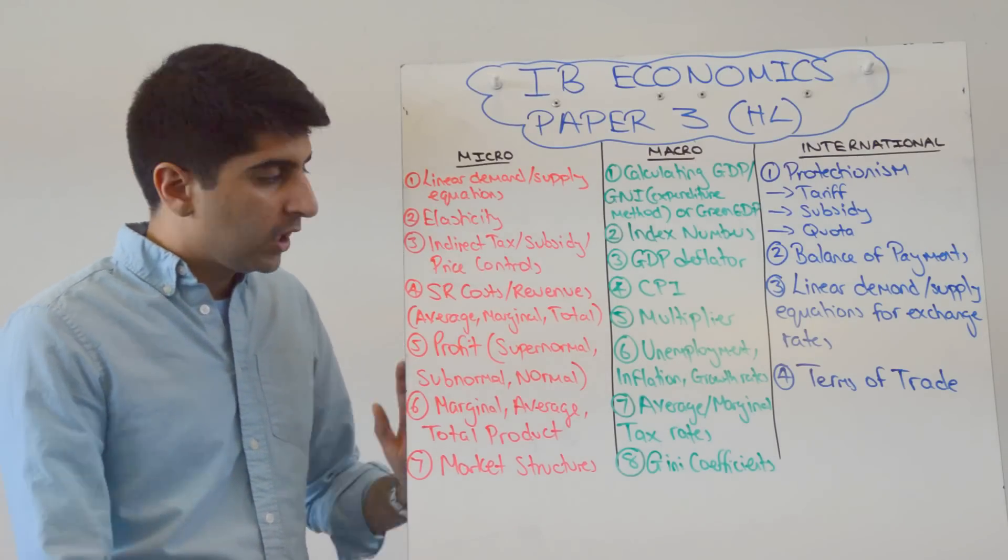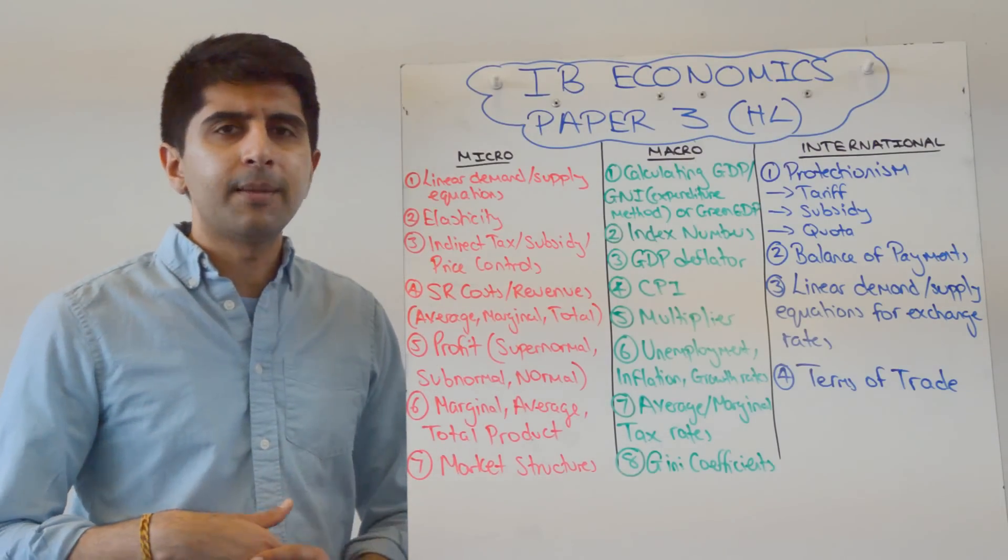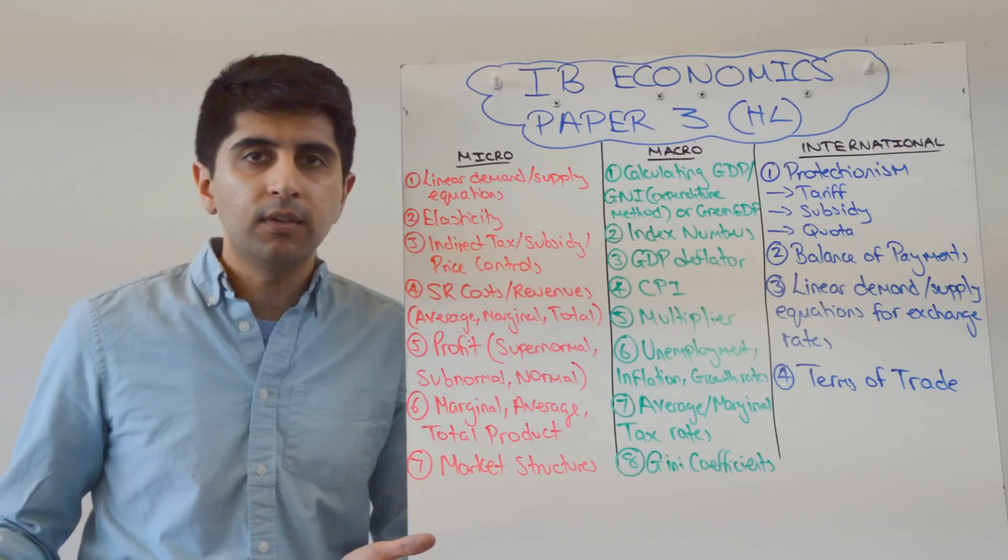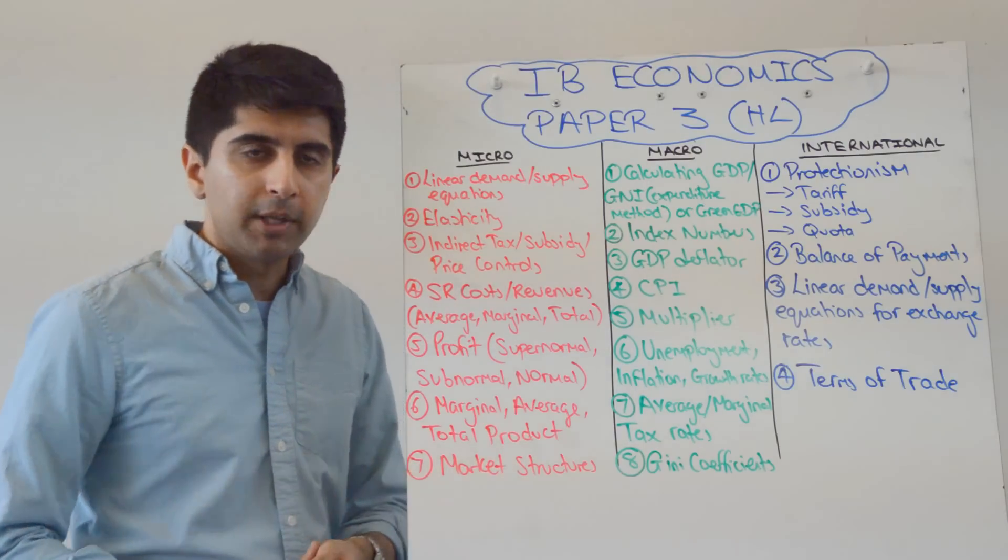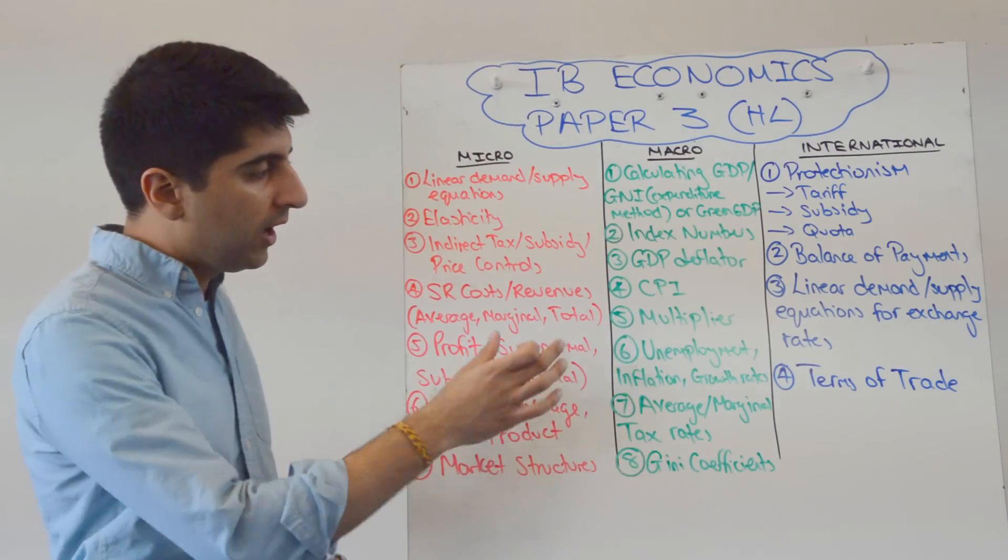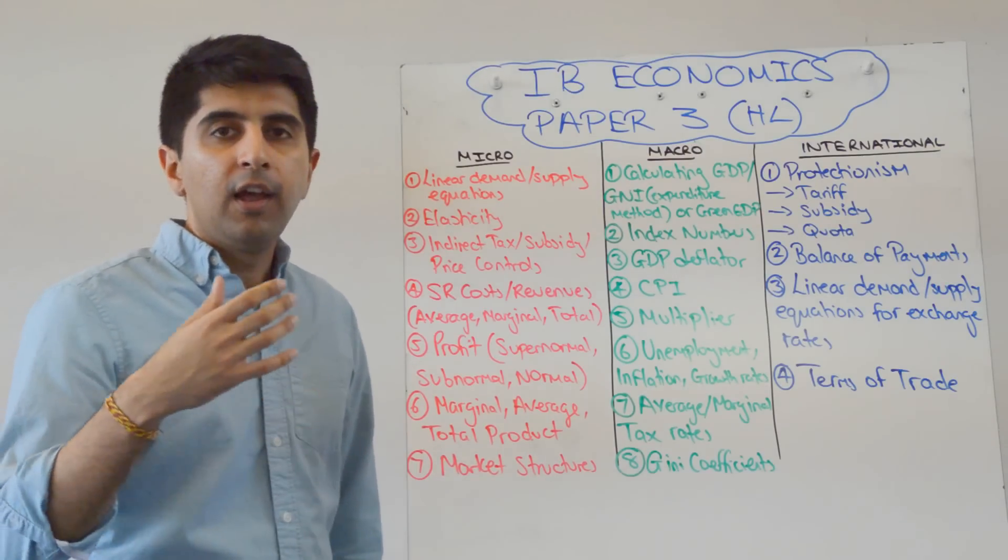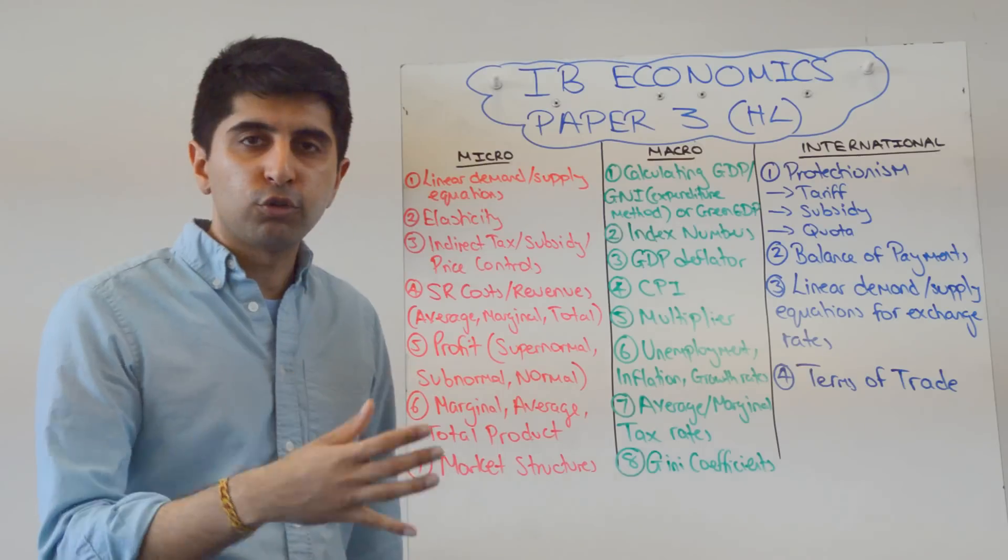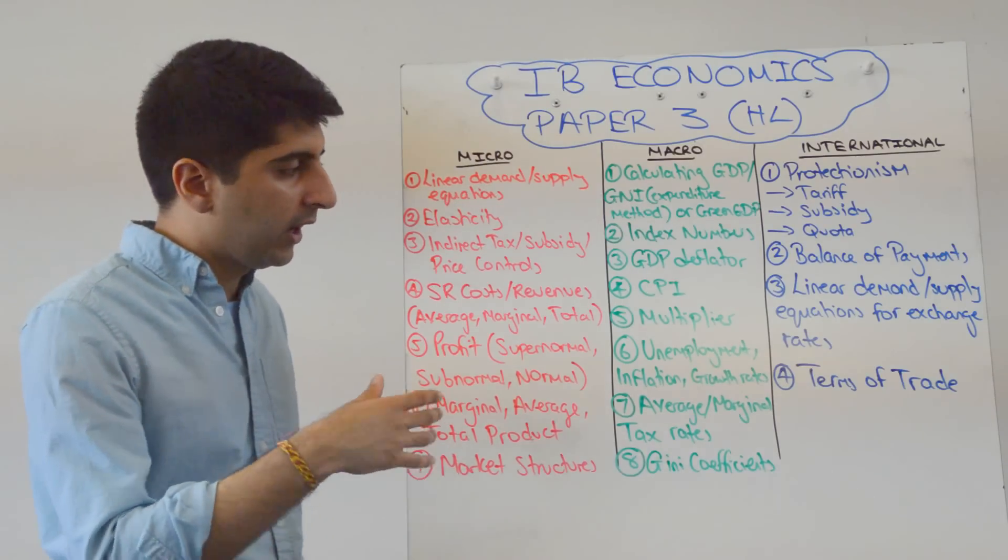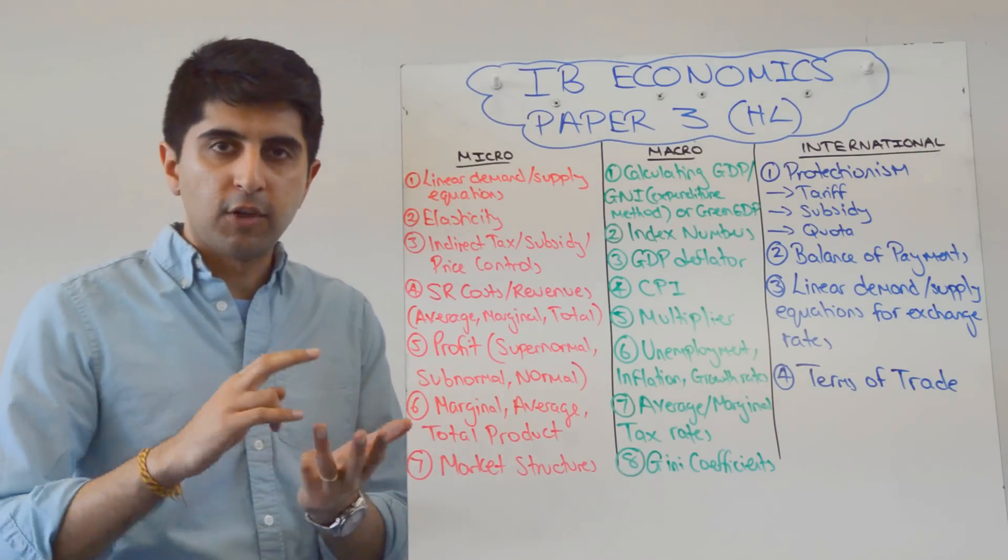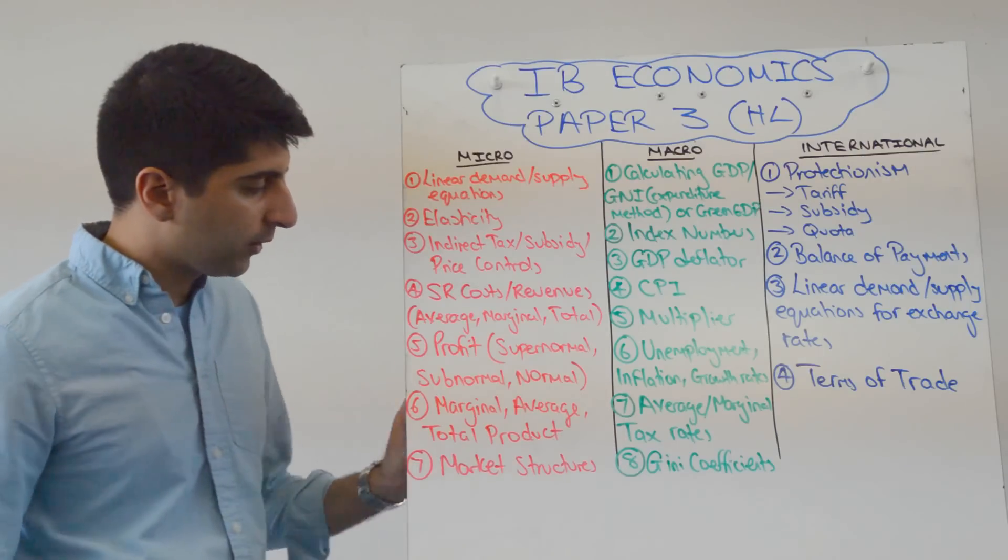Short run costs. Not so much long run costs. I don't really see them asking returns to scale. They might do, but it's not come up in the past. Maybe short run costs and then generally your revenues. So average cost in the short run, marginal cost short run, total cost short run, and then your average revenue, total revenue, marginal revenues. They can ask you those calculations.